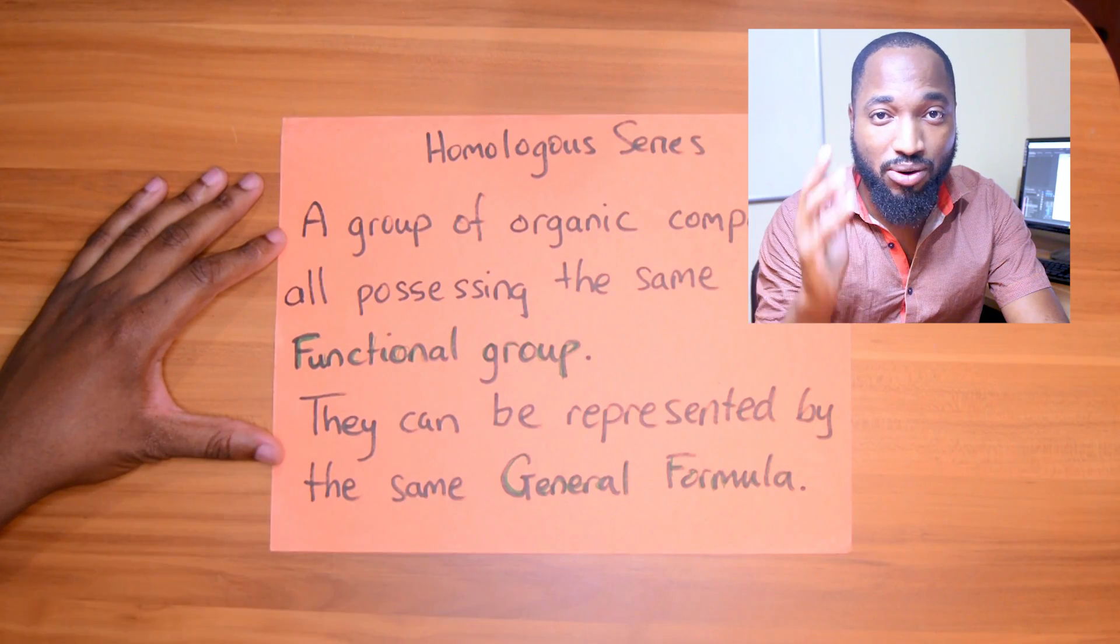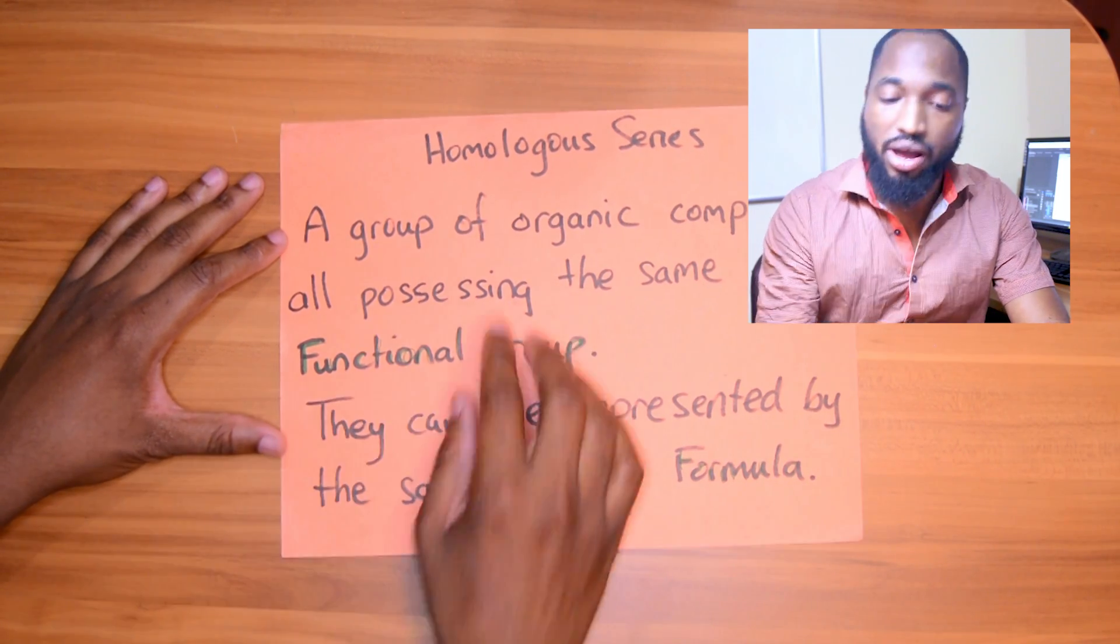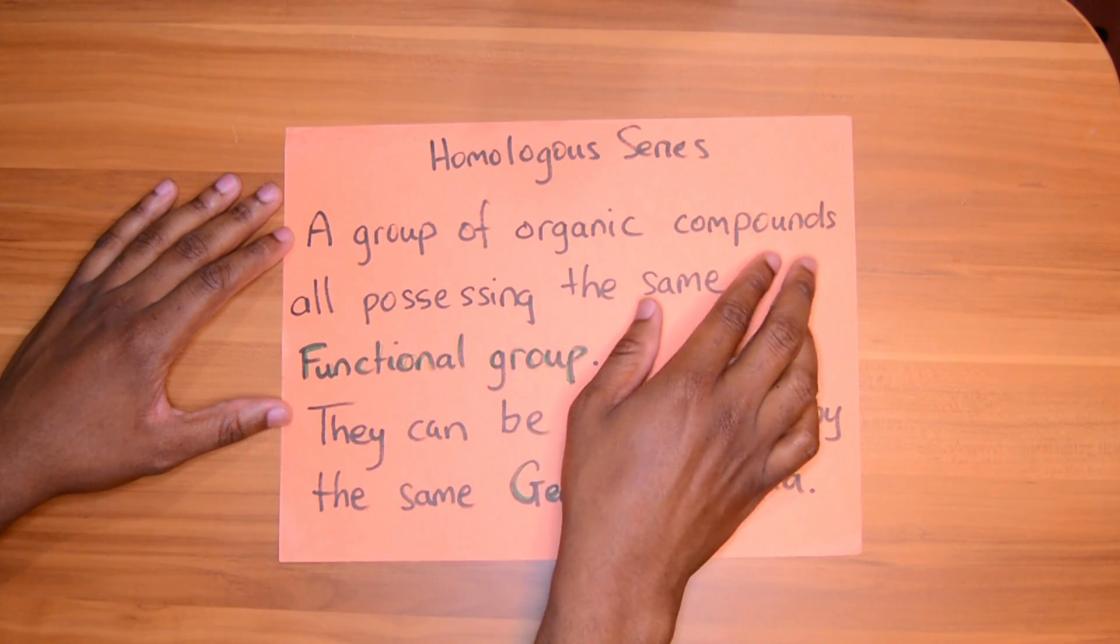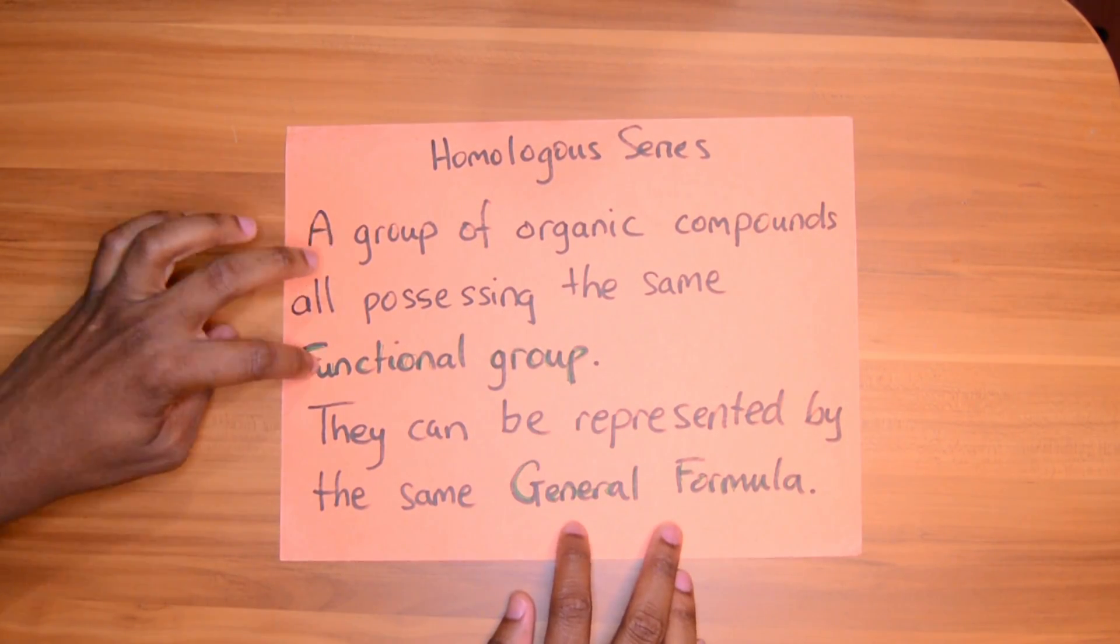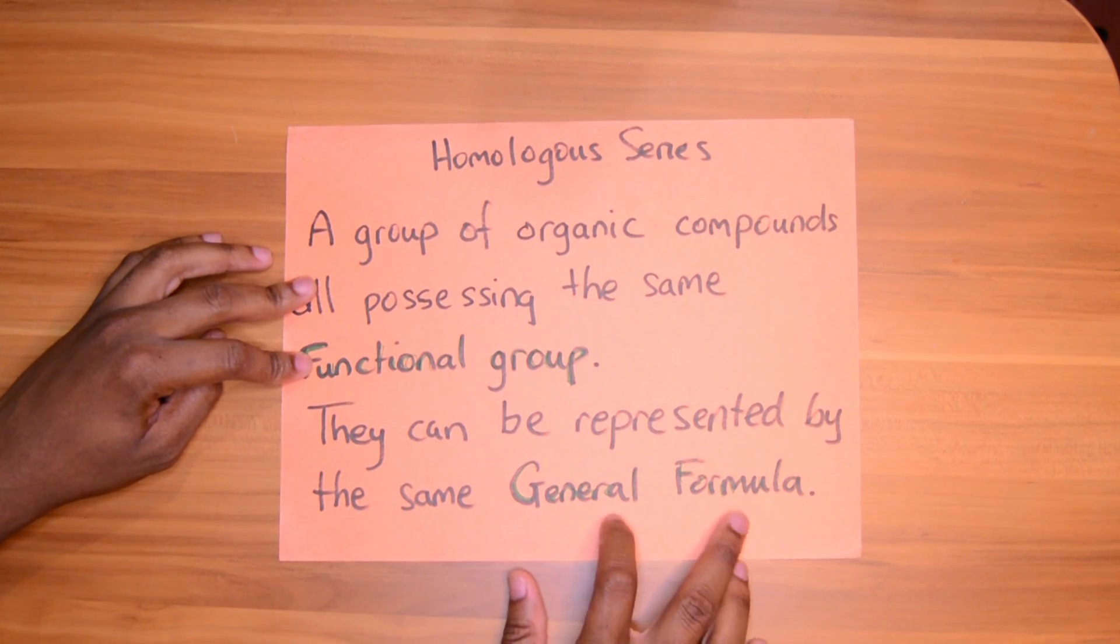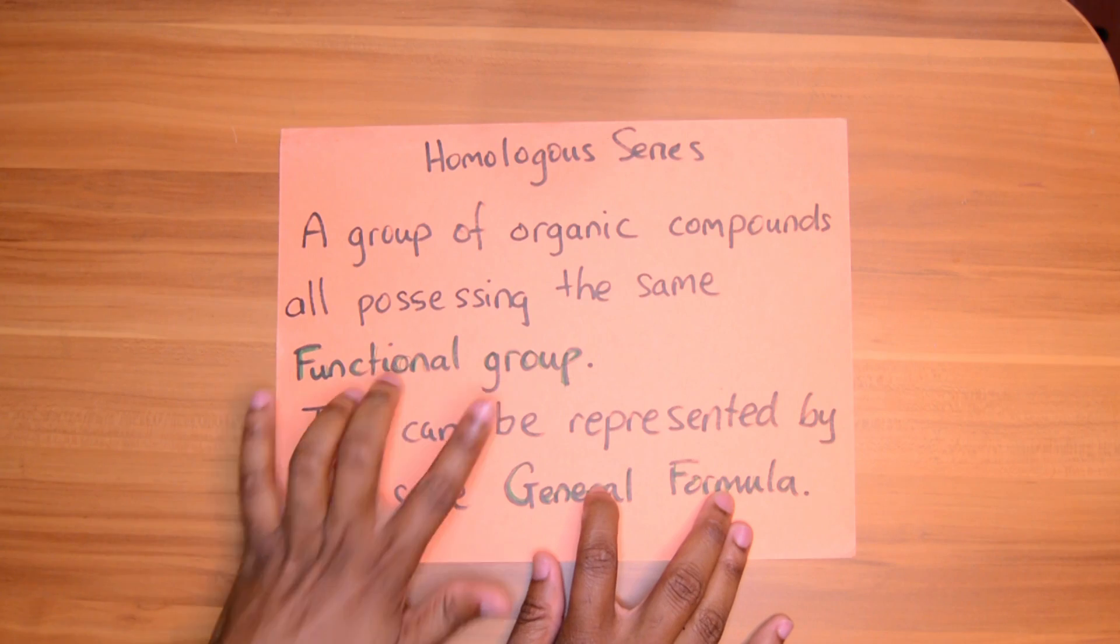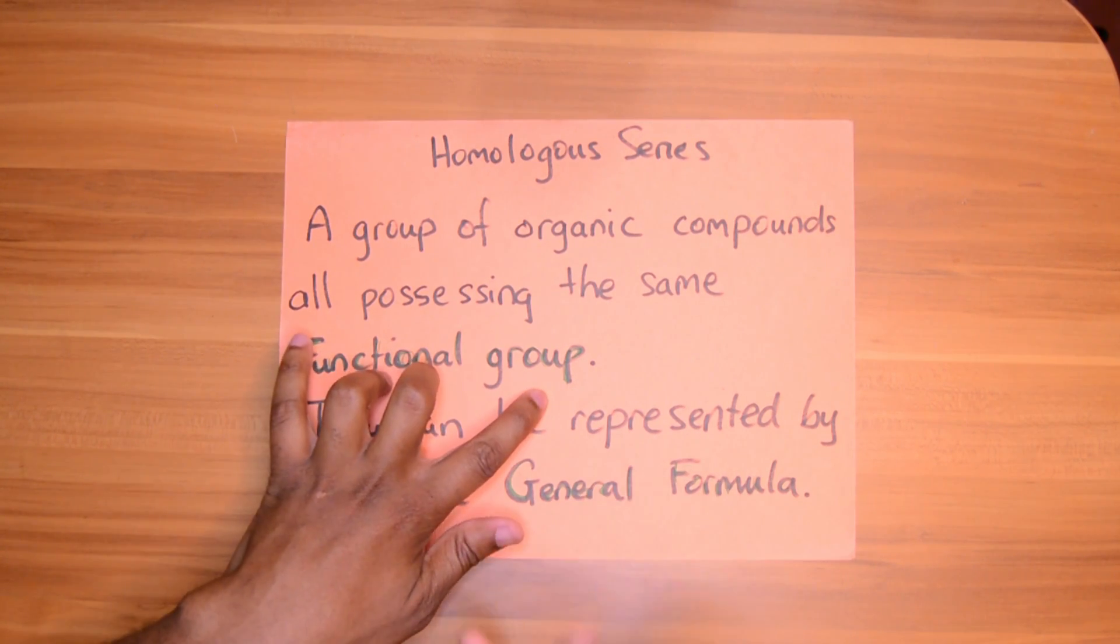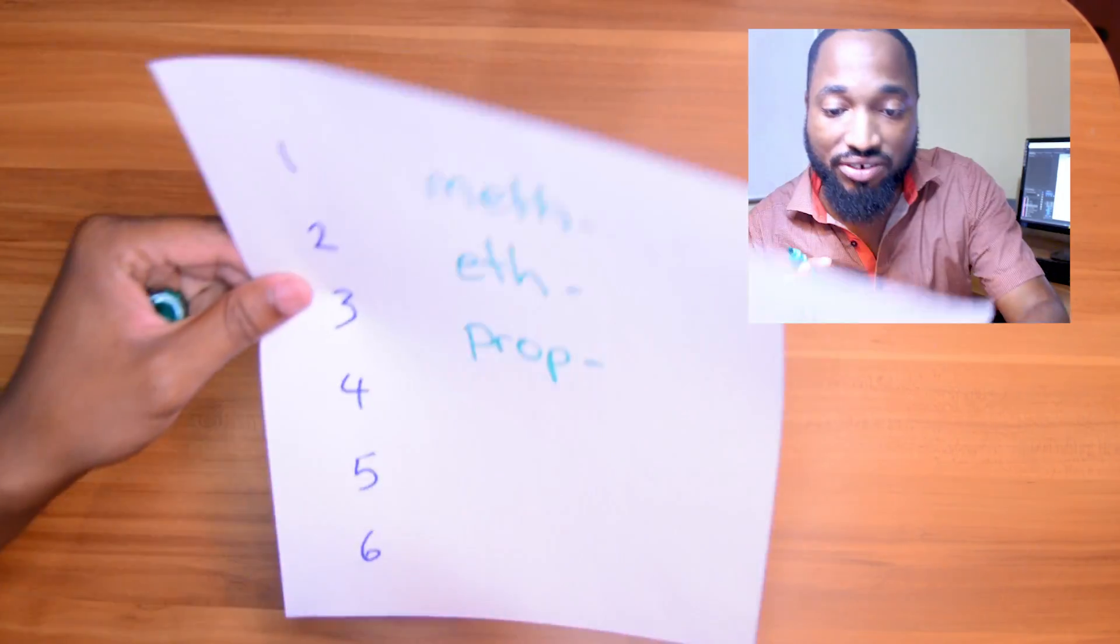Do it now. All right, so homologous series: a group of organic compounds all possessing the same functional group. So the two keywords are functional group and can be represented by the same general formula. Two keywords. Let that be in your definition: must have the same functional group, can be represented by the same general formula. Collect your two marks. Next thing you need to learn for homologous series: the prefixes.